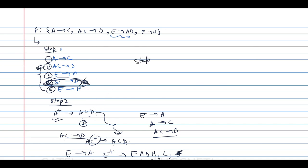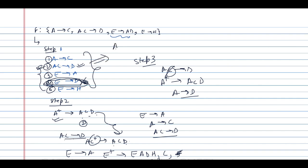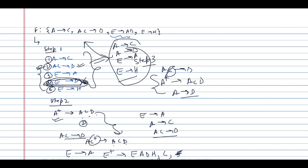In step 3, for AC→D: computing A-closure gives A, C, D, so C is not needed. The dependency reduces to A→D. The resulting minimal set is {A→C, A→D, E→A, E→H}, which covers all the original functional dependencies.